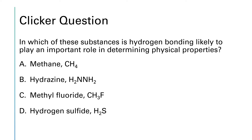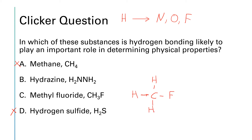In which of these substances is hydrogen bonding likely to play an important role? For hydrogen bonding to be present, you need a hydrogen atom attached to a nitrogen, oxygen, or fluorine. With that criterion, we can eliminate compounds A and D — they don't have nitrogen, oxygen, or fluorine. Methyl fluoride has a CH₃ group bonded to fluorine, but there's no hydrogen-to-fluorine connection. That leaves hydrazine, which has two hydrogens attached to each nitrogen, making hydrogen bonding present.